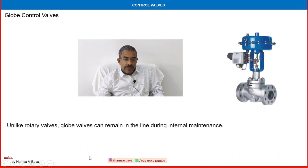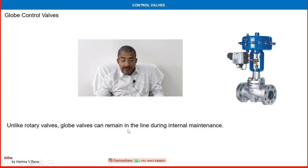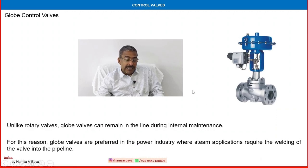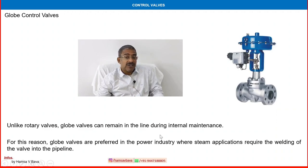Unlike rotary valves, globe valves can remain in the line during internal maintenance — that is very important. For this reason, globe valves are preferred in the power industry, where steam applications require the welding of the valve into the pipeline. Most of the power industry has steam applications where we use a globe type control valve.